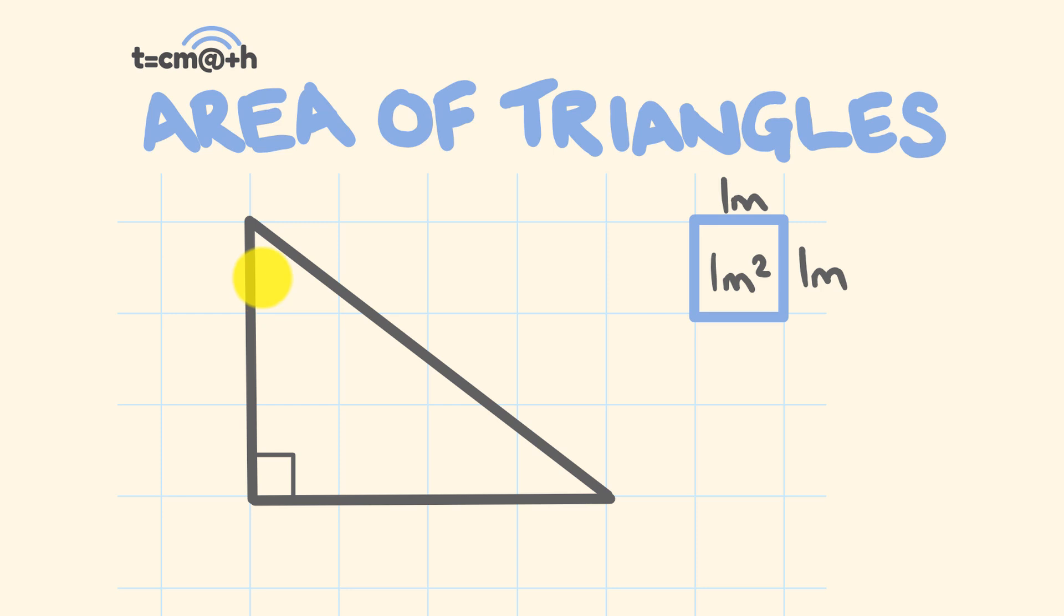So let's just launch into a few examples. The example I have here is we have a triangle that has a side length we could say is three meters, a side length of four meters, and a side length of five meters.